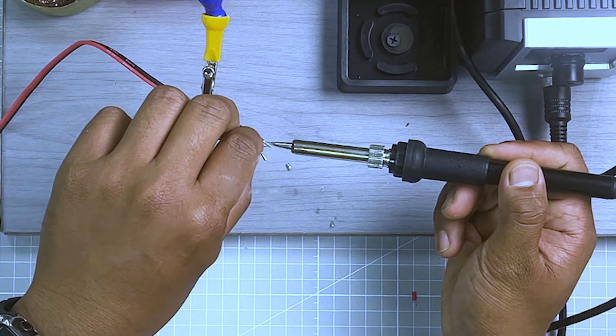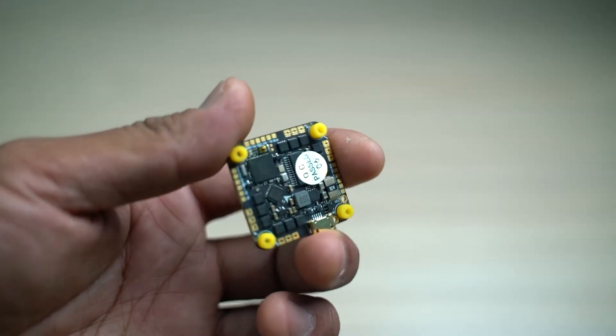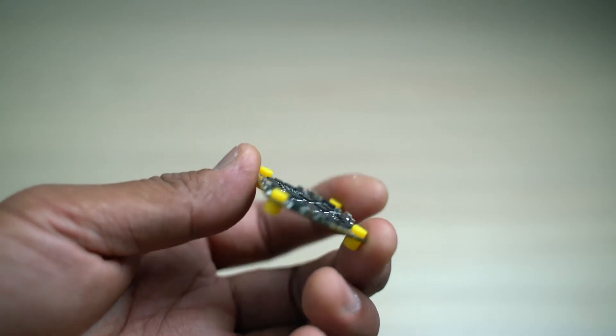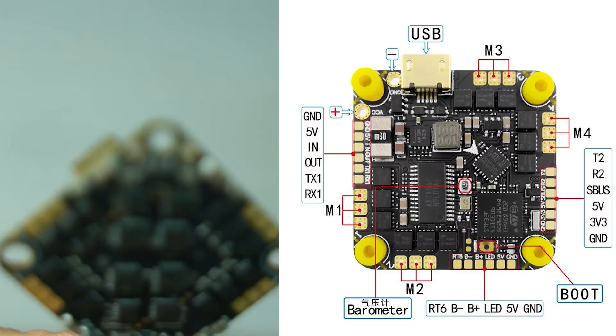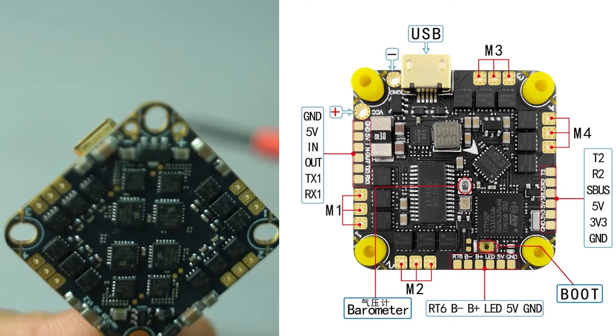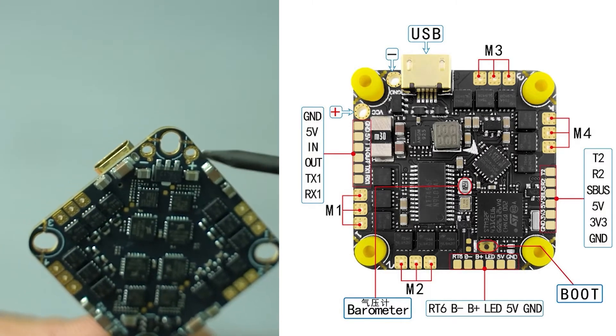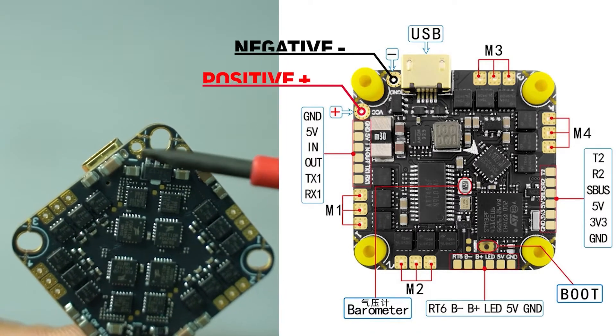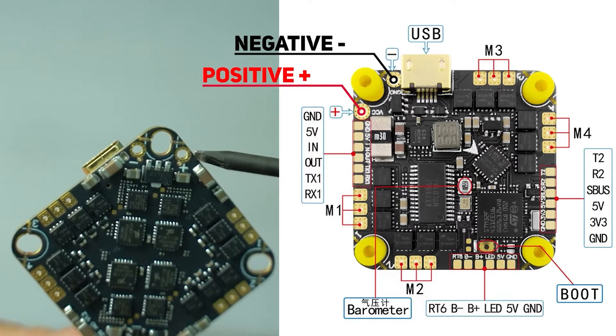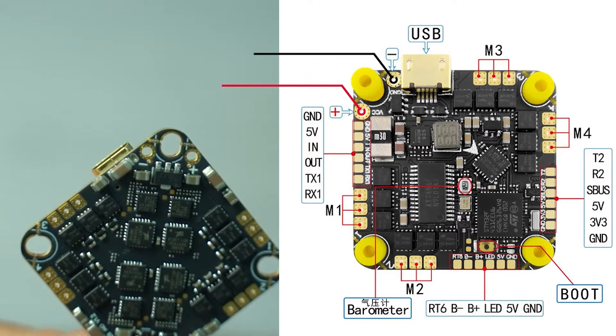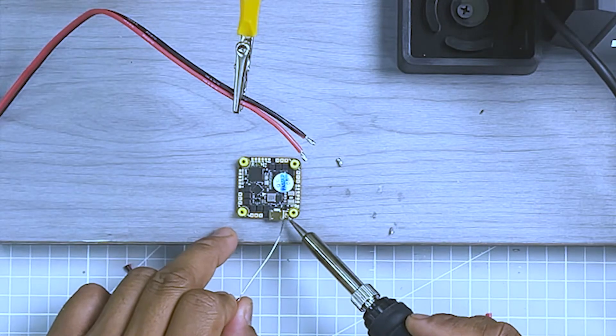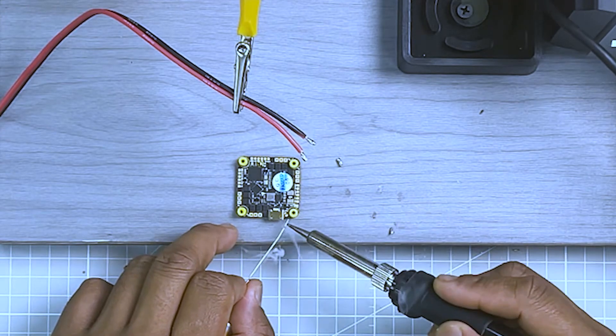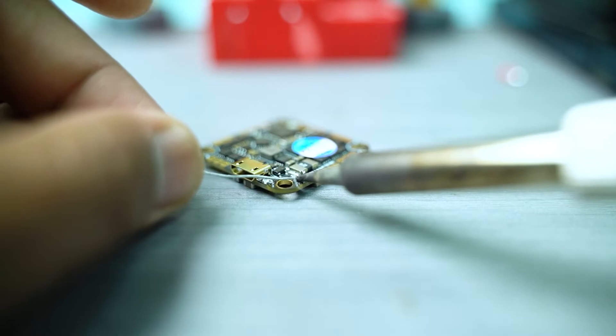After this, we go now to the flight controller. The power input to this flight controller is beside the USB port. You will see the negative and the positive at the bottom or VCC and GND on the top. This is the negative and this is the positive. Apply soldering on each input. Be careful in applying soldering lid because this flight controller board is very sensitive.